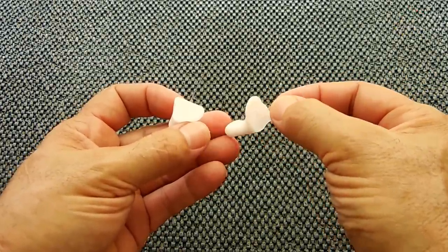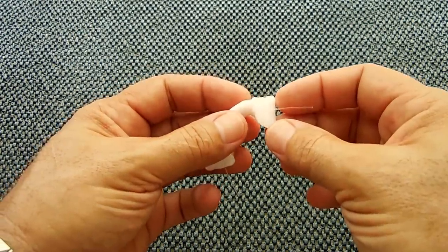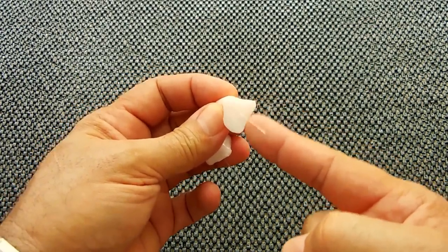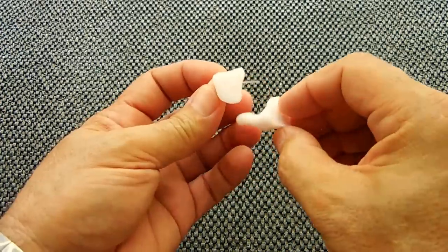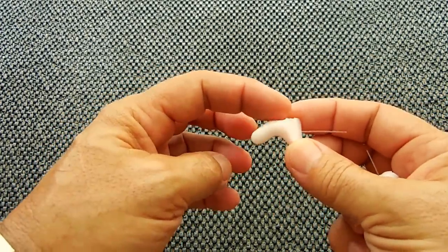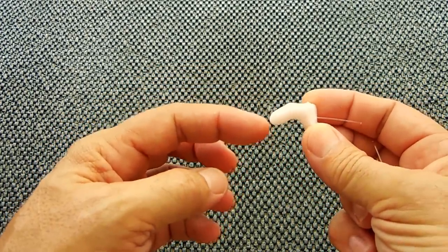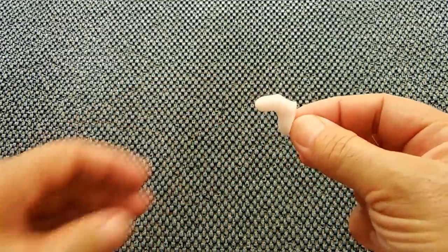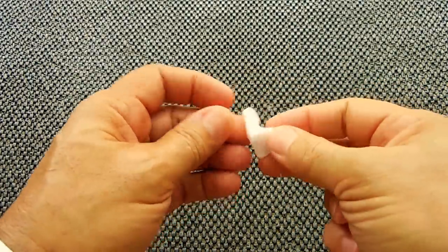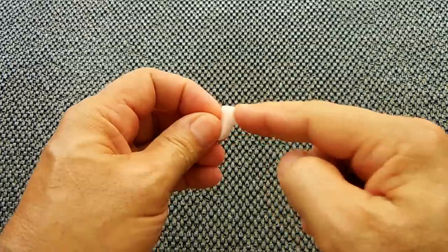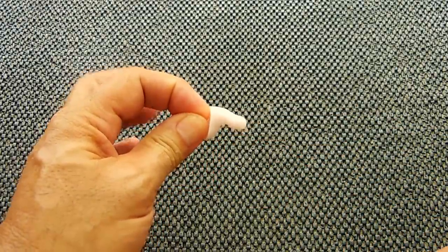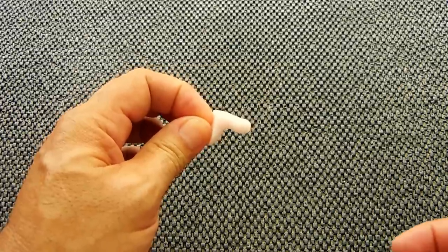The easy way to tell which is the right and which is the left: you look at the flat side of the mold. Your ear canal curves inward toward the back of your head, so this one would go inside my right ear, and this one with the flat bottom would go in the left ear.